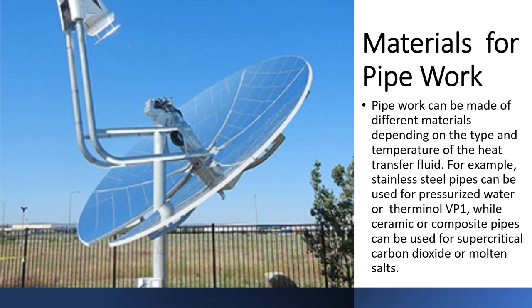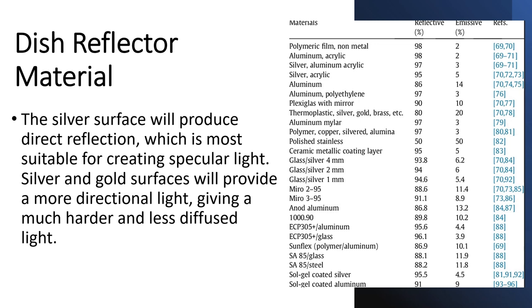For example, stainless steel pipes can be used for pressurized water or Therminol VP1, while ceramic or composite pipes can be used for supercritical carbon dioxide or molten salts. The silver surface will produce direct reflection, which is most suitable for creating specular light. Silver and gold surfaces will provide a more directional light, giving a much harder and less diffused light.